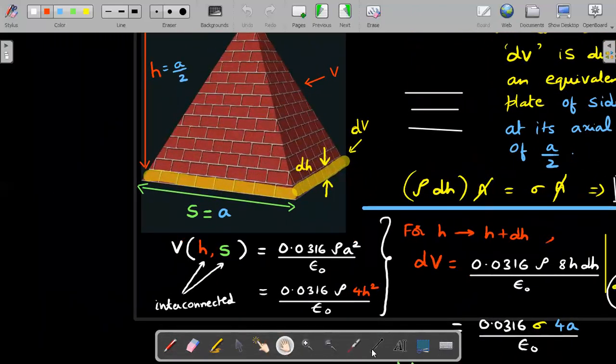Using that idea, the potential at the apex point of a pyramid is given by 0.316 ρa²/ε₀. I will say this potential is initially a relation with variable H and variable S, but we realize these two are interconnected variables - H is two times S. So I can write this entire thing in one variable. I'll choose to write it in terms of H. If I were to replace a, I have to replace it with 2H. So V(H) function is this expression with 4H² as the factor.